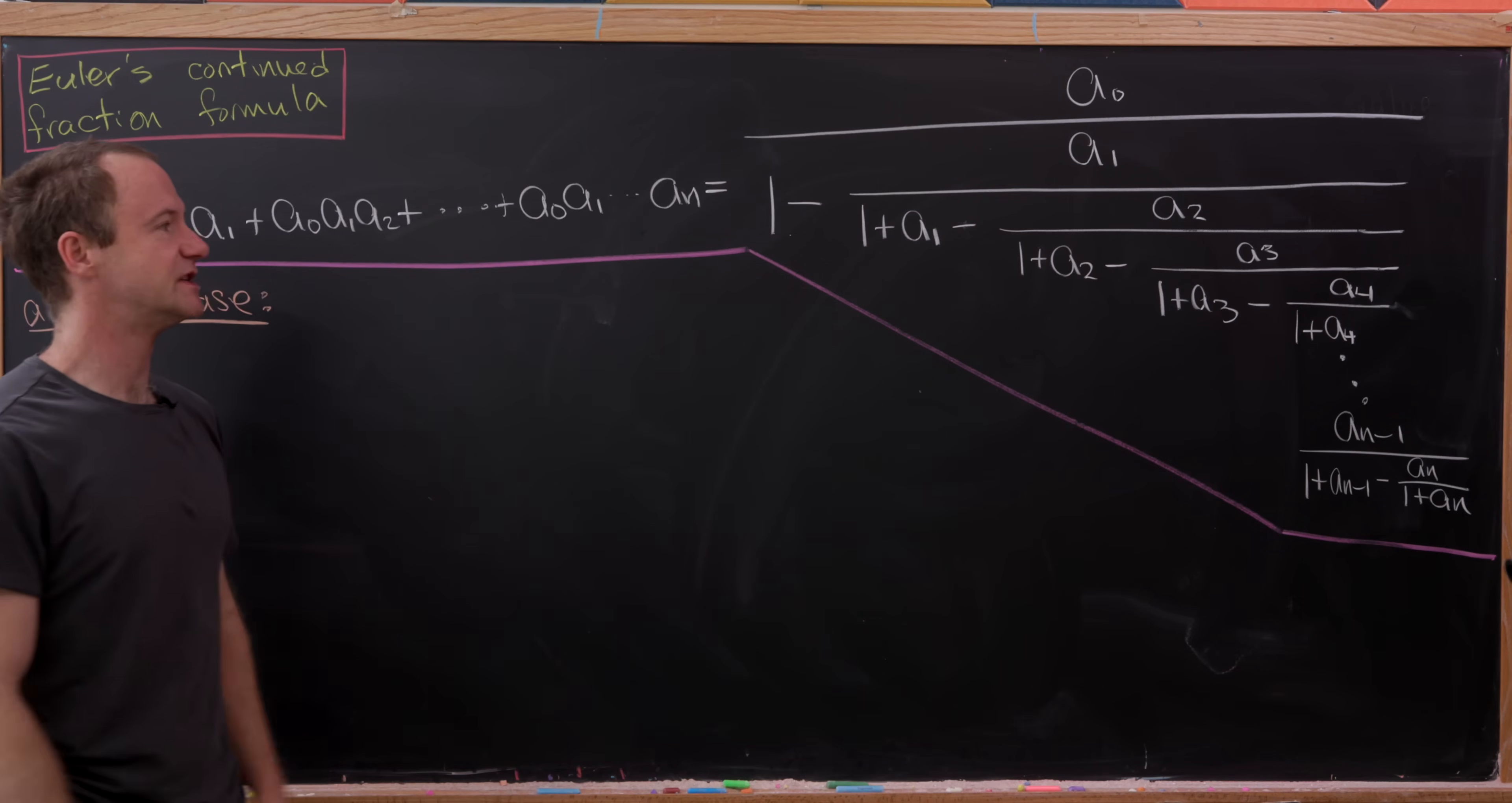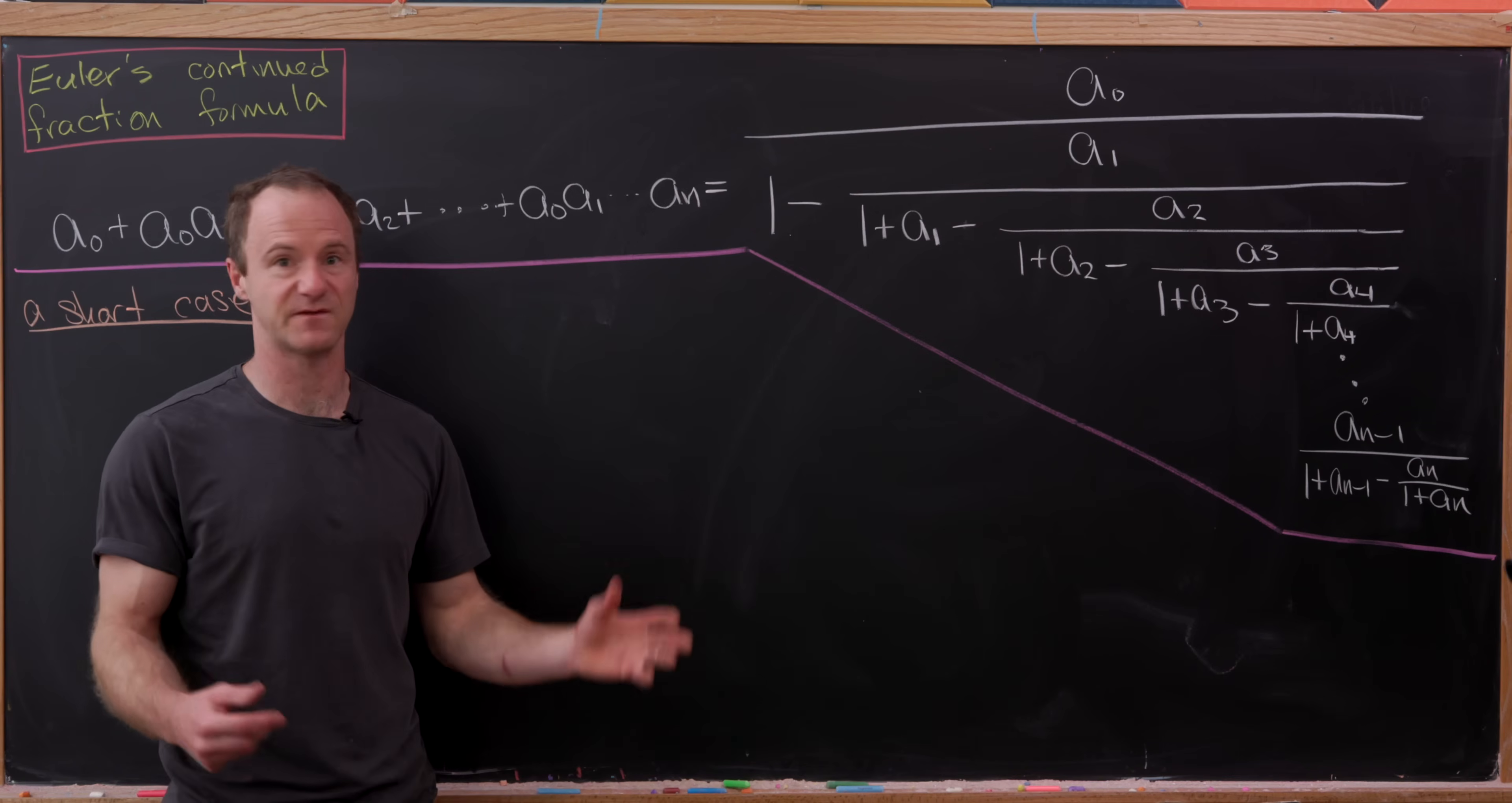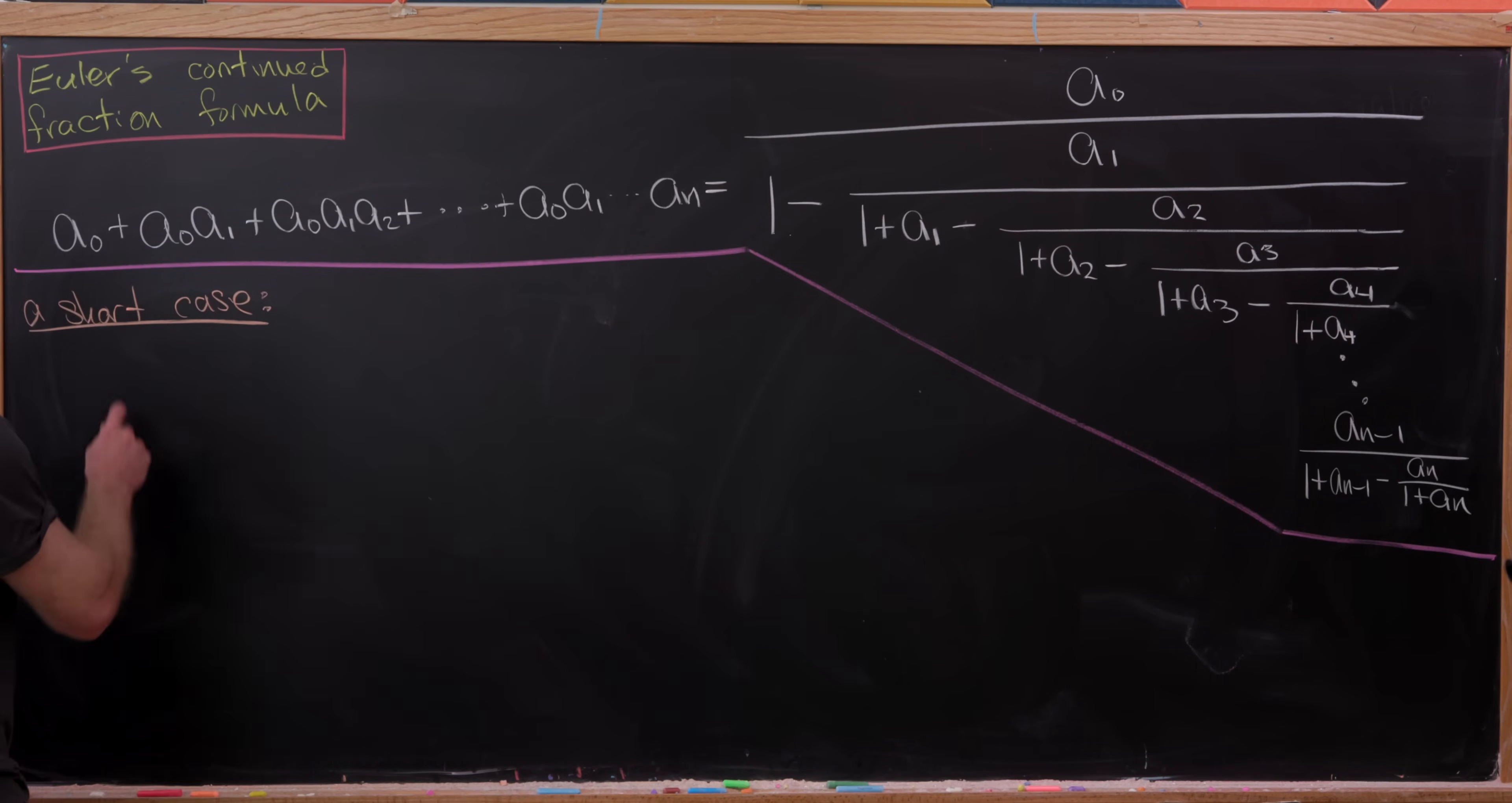And this sum continues via a limit to an infinite series on the left hand side and an infinitely deep continued fraction on the right hand side. And we'll actually use that to find a continued fraction representation of e a bit later. But what I'd first like to do is do a short case of this formula. Let's say we just go up to a depth of 2.